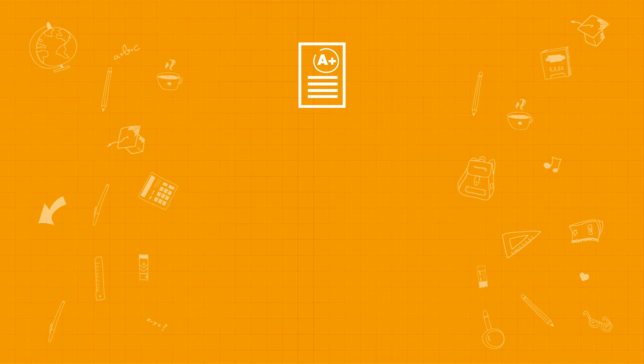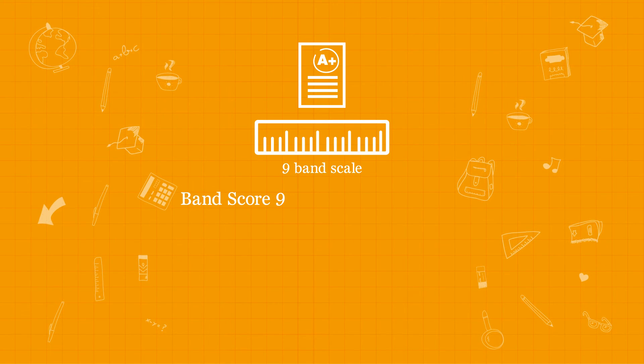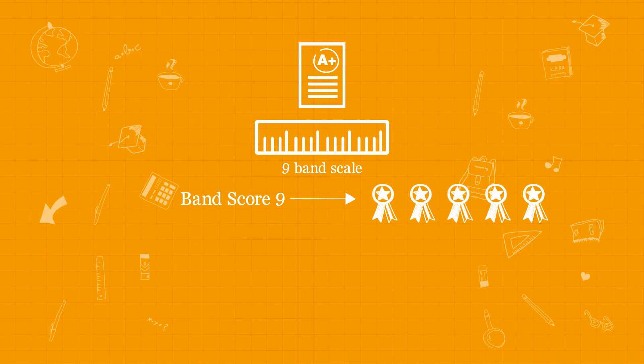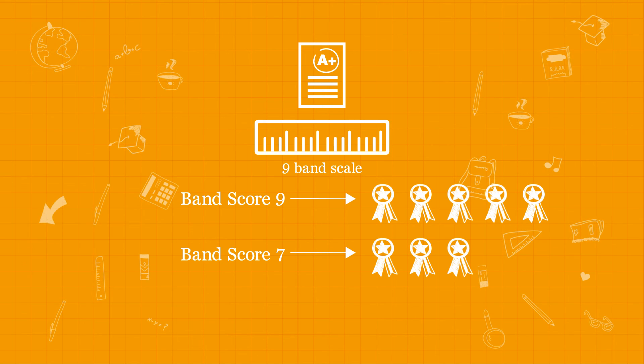IELTS results are reported on a 9-band scale. A band score of 9 declares a candidate to be an expert user. A band score of 7 suggests a good user, and a score of 4 suggests a limited user.